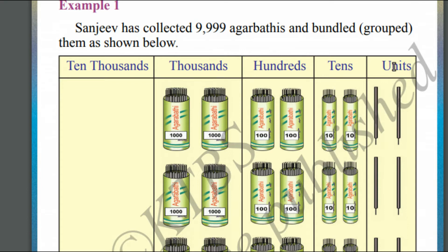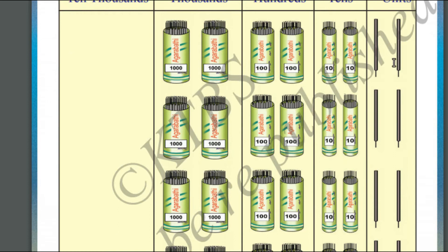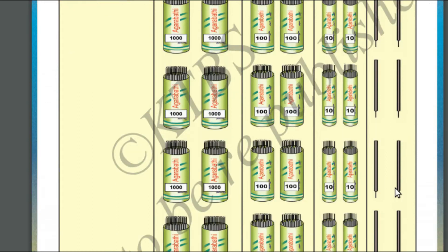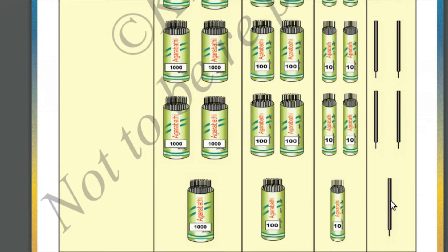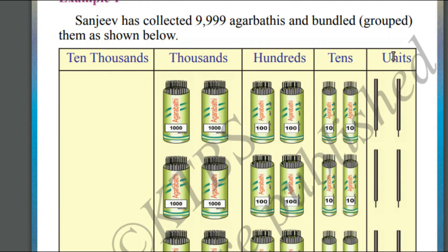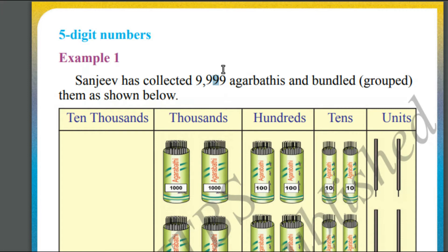We can see in the units place there are nine agarbathis. In the tens place, we have got ninety agarbathis. Why? Because in the tens place we have nine, which is nothing but nine times ten — ninety agarbathis.